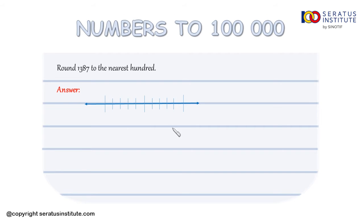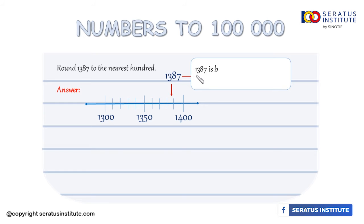So this is the number line. There is 1300, 1350, and 1400, and the position of the number is in here. From the number line we can conclude that 1387 is between 1300 and 1400.